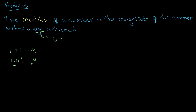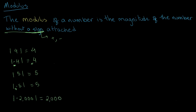Let's look at a few more basic examples. The modulus of 5 is equal to 5, because there is no sign attached. The modulus of negative 5 is also equal to 5, because we rewrite it without the negative sign. Similarly, the modulus of negative 2,000 is 2,000. We can think of modulus as the positive version of a number — if it's already positive we keep it, if negative we make it positive. Modulus can also be referred to as absolute value.